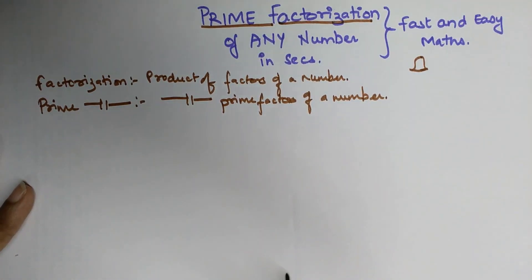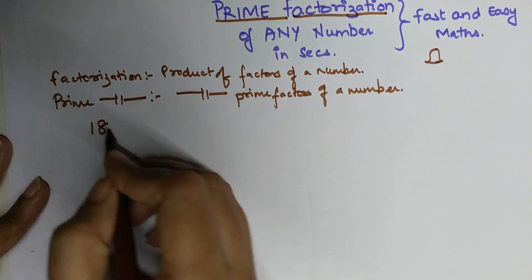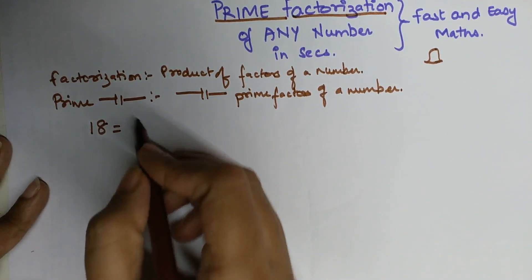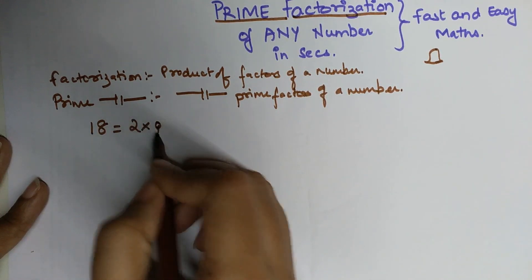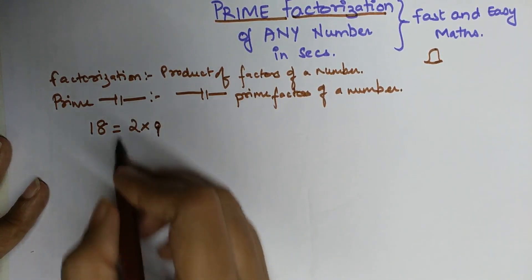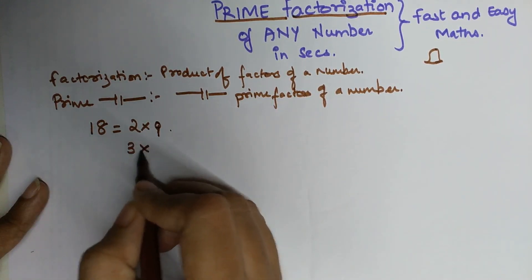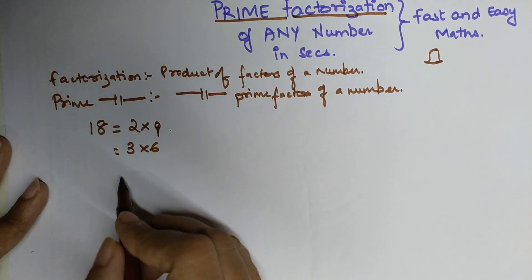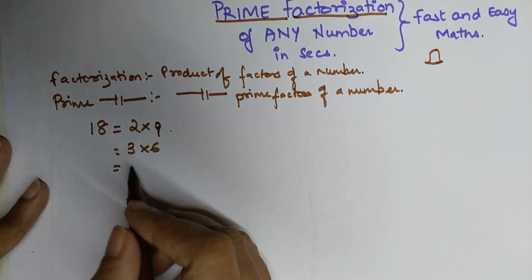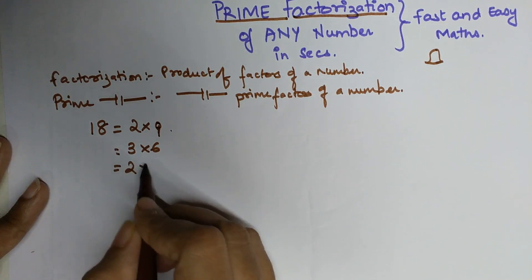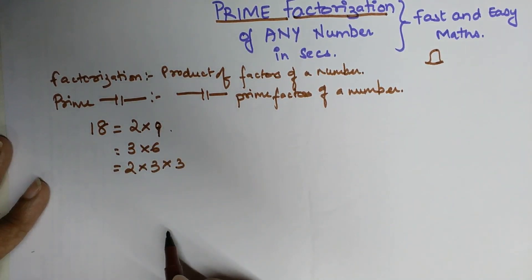Let's take for example the number 18. So 18 can be represented as the product of 2 into 9. It also can be represented as 3 into 6, and it also can be represented as 2 into 3 into 3.